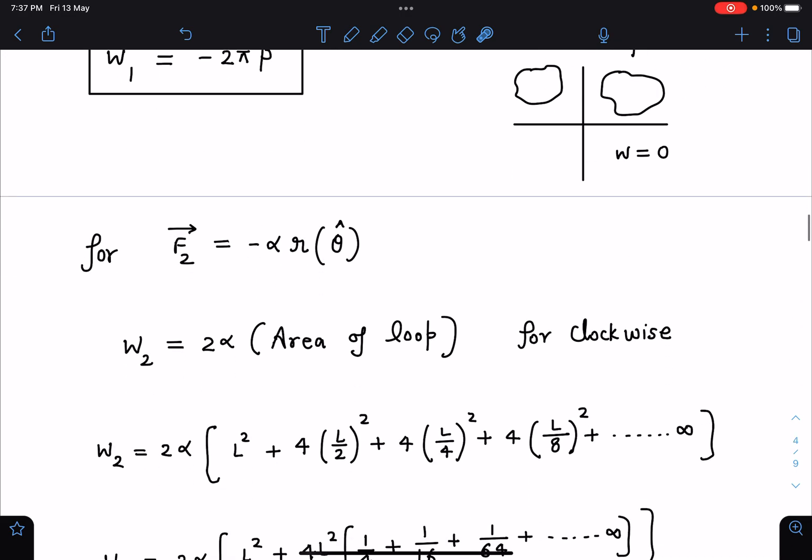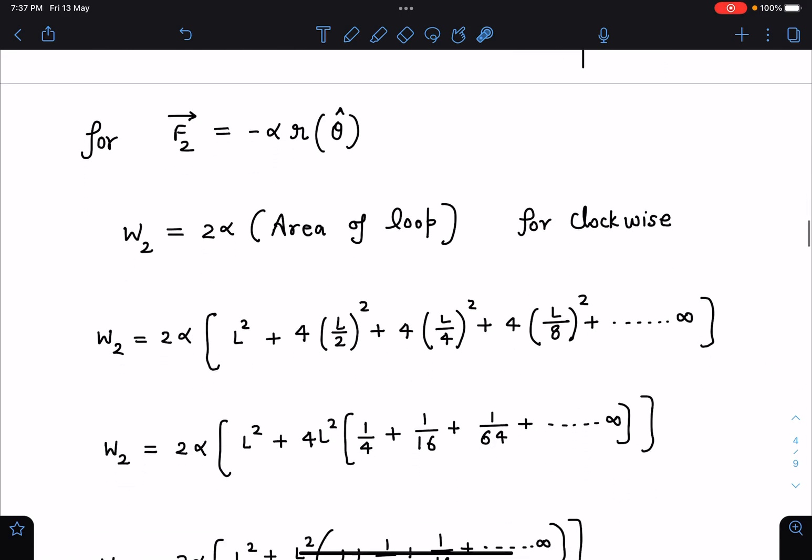Now area of all the squares we have to take. For the central one it is L squared, and there are four such squares at each corner with the side length L by 2, so 4 times L by 2 whole squared, next 4 times L by 4 whole squared, 4 times L by 8 whole squared, and till infinity we are going. Similarly like this becomes infinite GP.